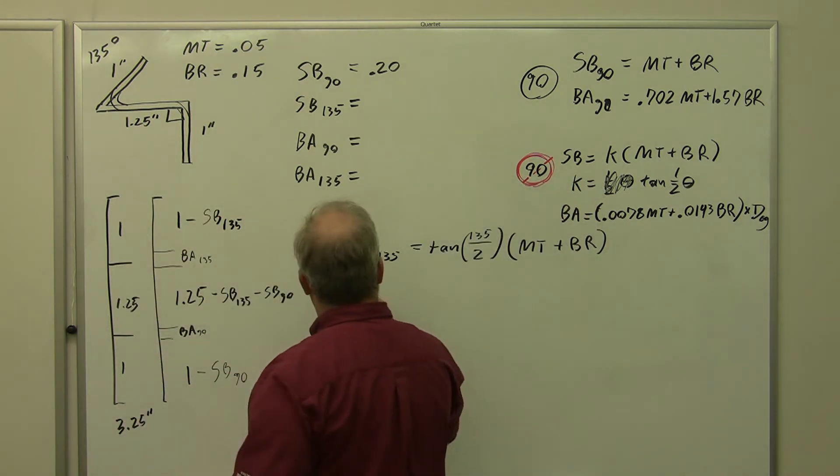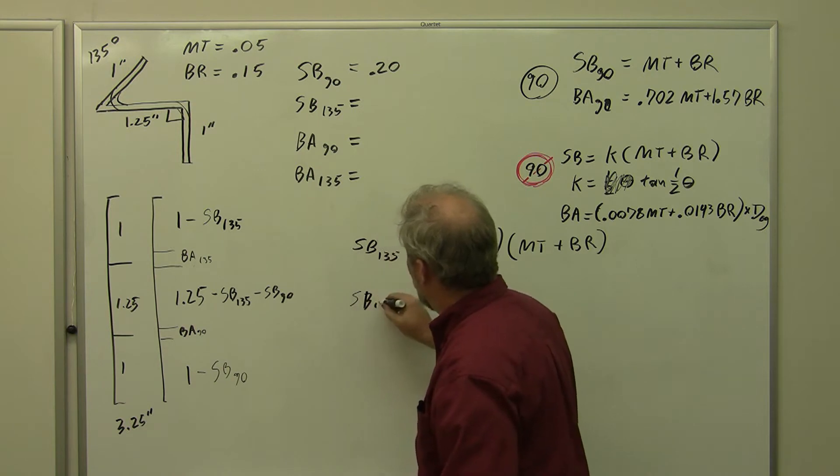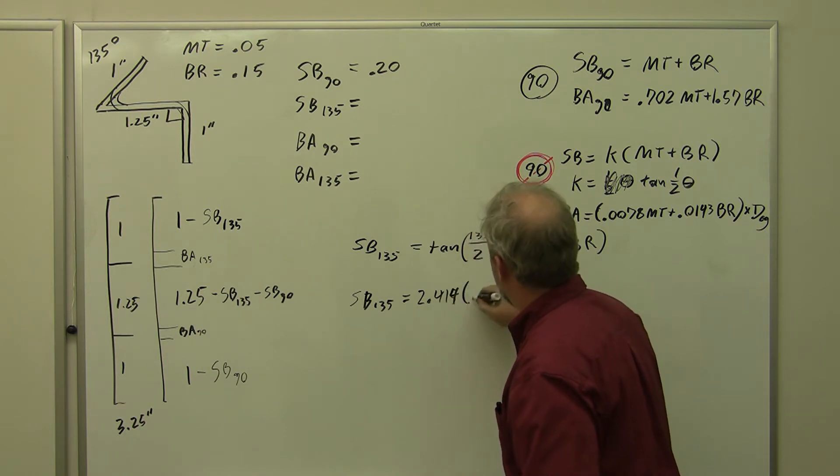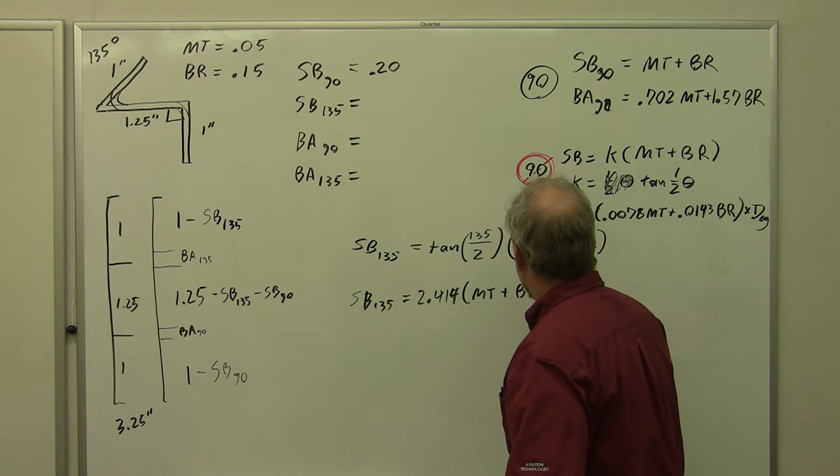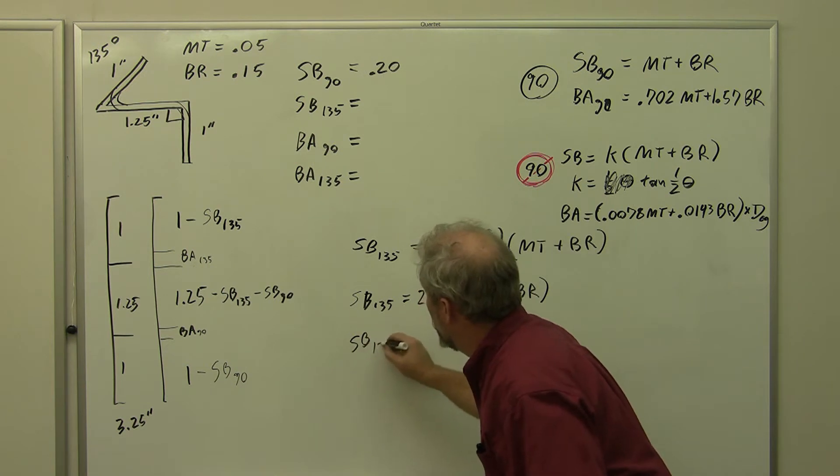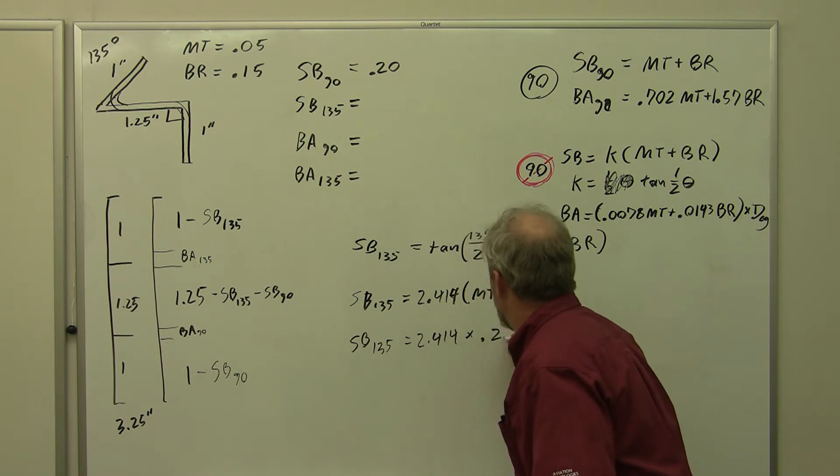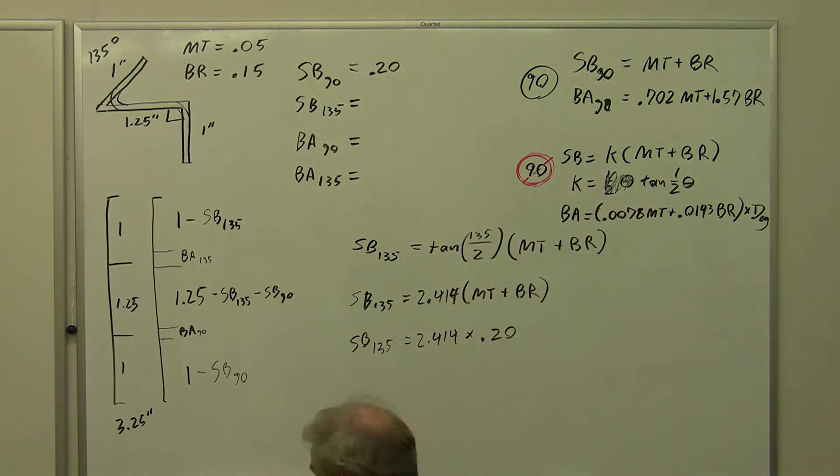So setback 135 equals 2.414 times material thickness plus bend radius, but that value was 0.20. So setback 135 equals 2.414 times 0.20, which is 0.482.